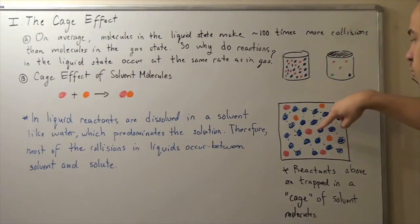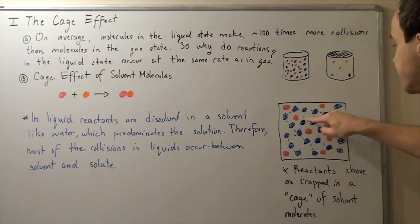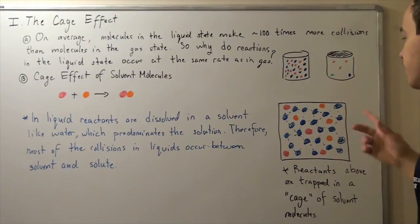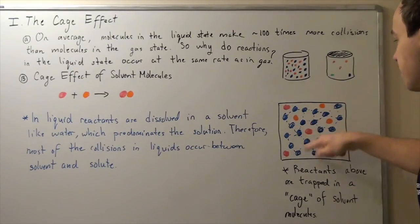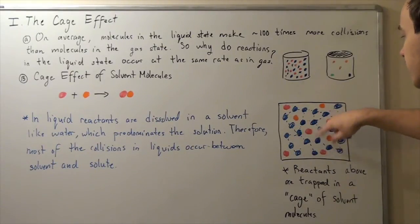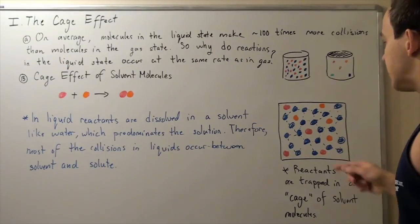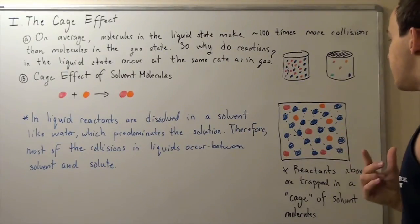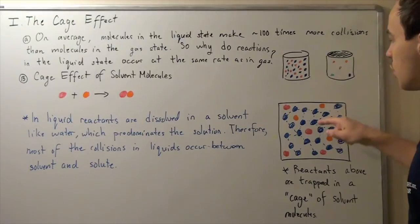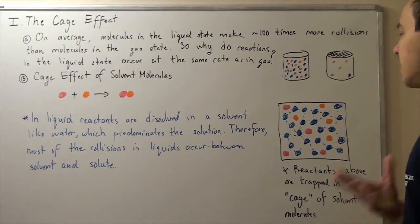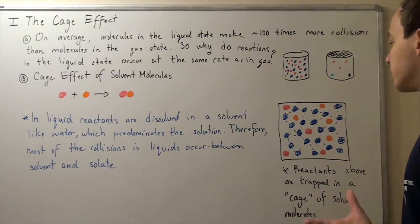So notice that the red molecule is in a cage of solvent molecules. And before it leaves, they make many collisions with the water cage. Eventually, however, it will bounce out, and if it bounces into another cage where this orange molecule is present, then it will react to form our products.